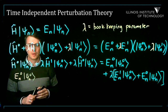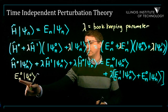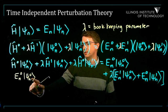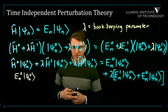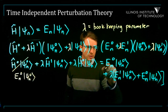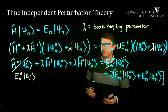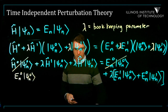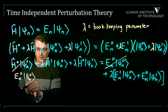We know H0 psi-zero equals E-zero psi-zero, and that's going to cancel the corresponding term on the left side. Everything else has a lambda in it, and so we're going to have a single equation for the corrections, which involves the corrected wave function, the corrected energy, and H1.